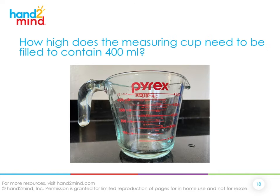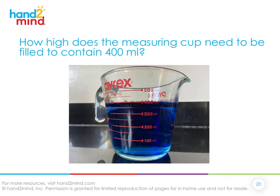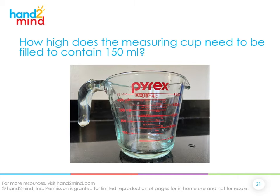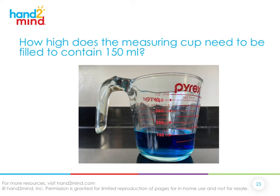How high does the measuring cup need to be filled to contain 400 milliliters? We see the 400 mark right where the arrow is pointing, so we need to fill it up to that mark. What about 150? There's the 150 milliliter mark — if we fill it up to that mark, then we have exactly 150 milliliters.